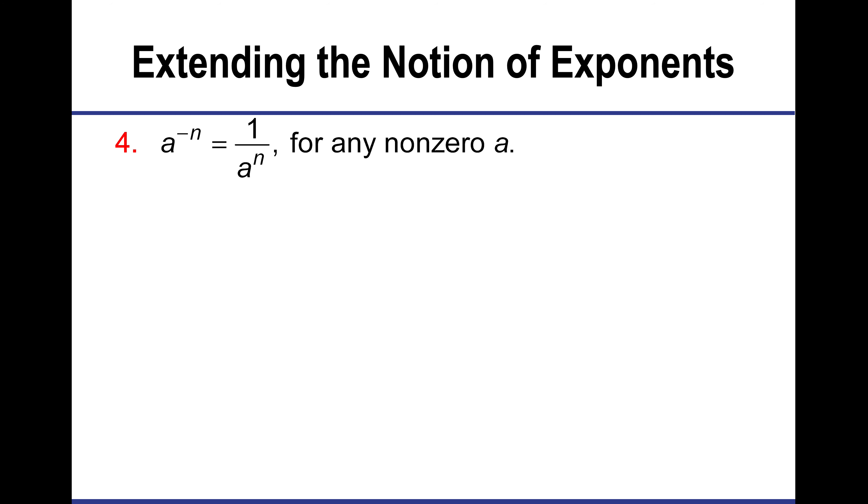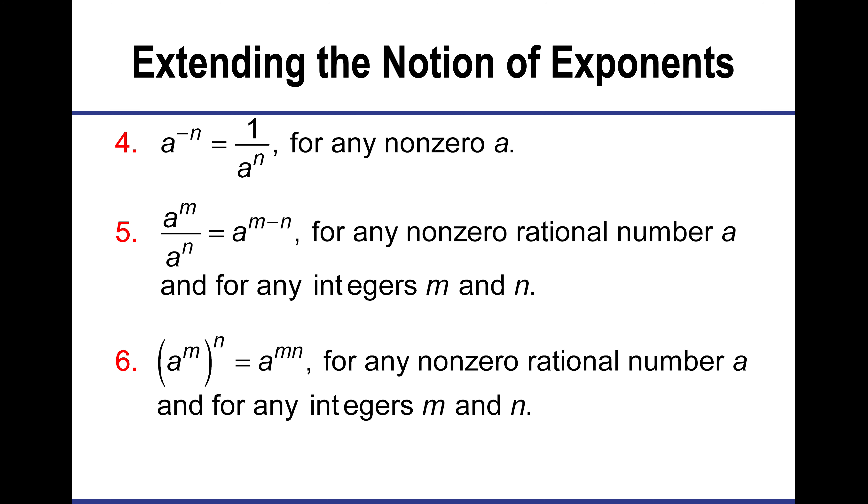In a to the negative n, it's going to flip it and become one over a to the n. And if I'm dividing two exponential expressions, I'm going to subtract the exponents. And this is the final one. When I raise an exponent to another exponent, I multiply.